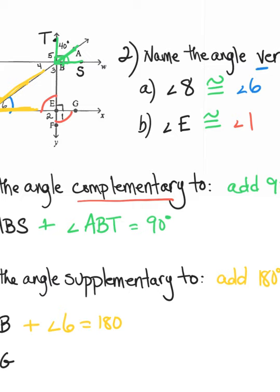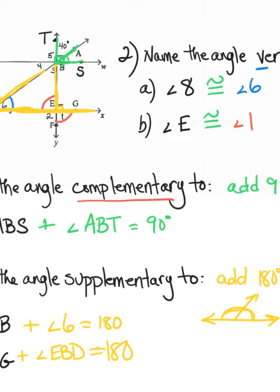If we take a look at angle BEG — that's a 90-degree angle — the angle I need to complete this straight angle would be angle EBD. Because anytime we're looking for supplementary angles, we're looking for angles that complete that straight line.